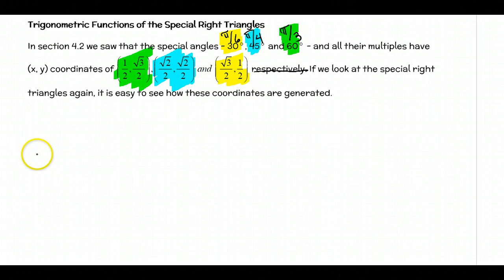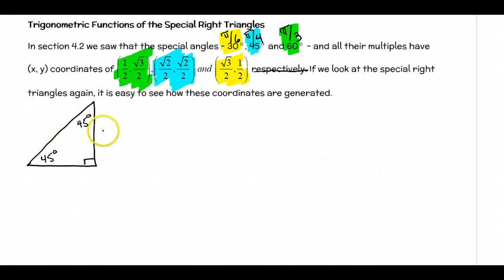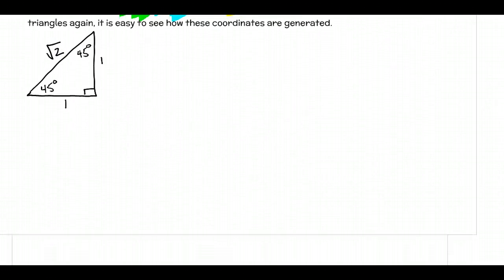Let's take a look at how these come in when looking at the triangles. Starting with the 45-45-90, which is our isosceles right triangle. The ratio of the sides in the 45-45-90 is always the same — the two legs are congruent, so we let each be 1, and using the Pythagorean theorem, the hypotenuse is the square root of 2. The ratio is always 1 to 1 to root 2.